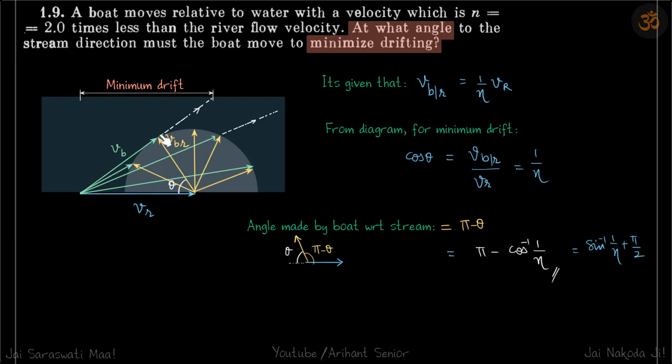Initially the boat is here. If it attempts to go in this direction, then it will go like this. If it attempts to go in this direction, then it will eventually go like this. You can see that in every other case except tangent, the drift is going to be more.